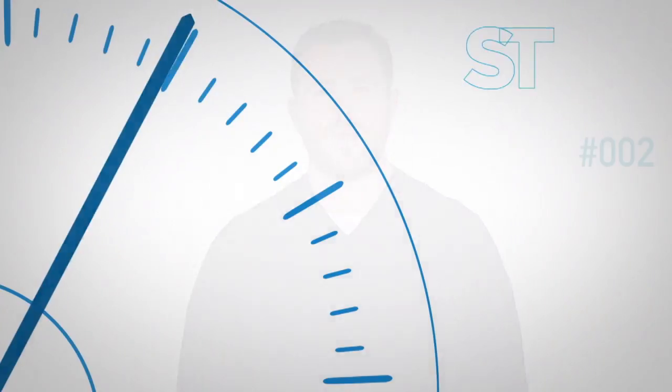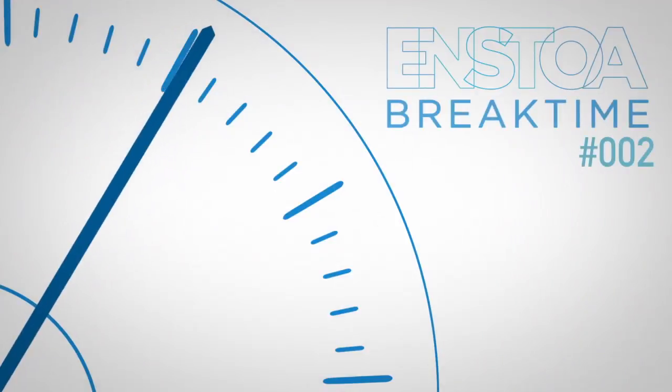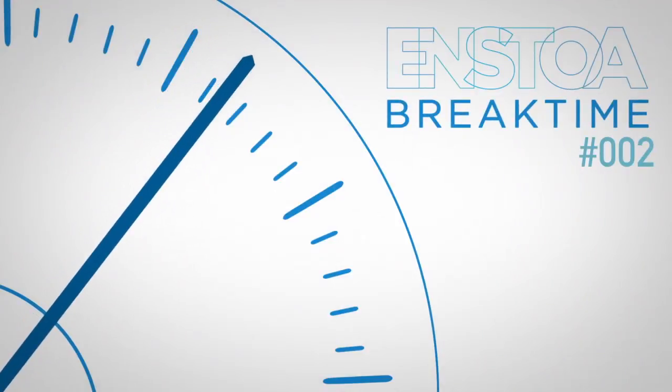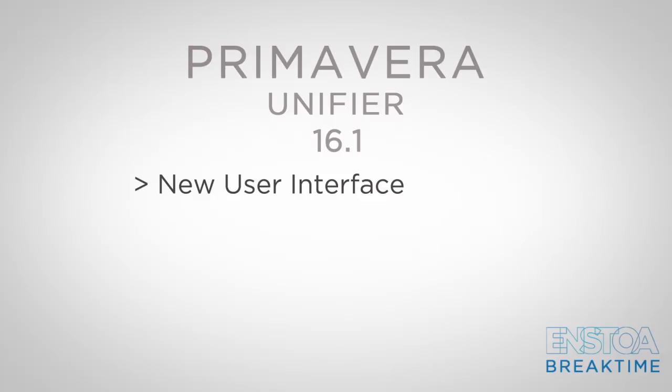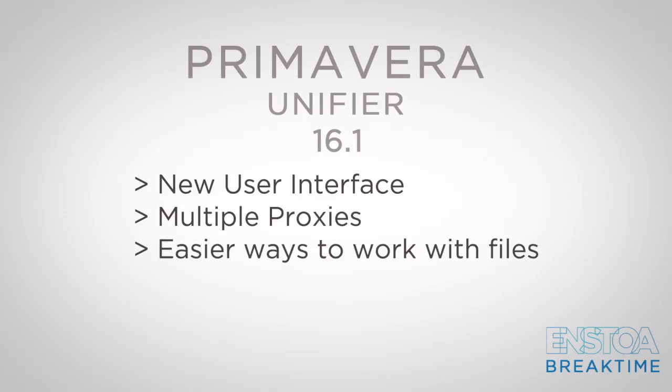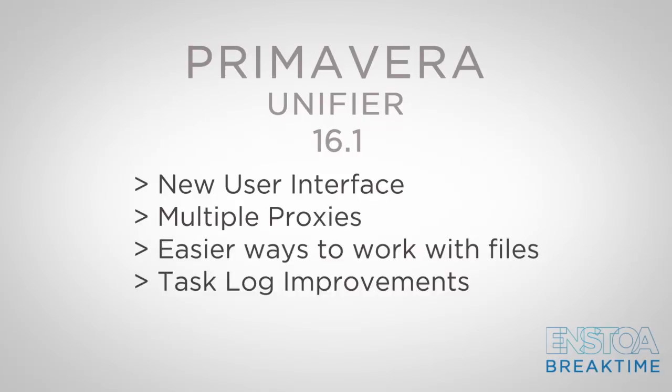Welcome to your Instoa break time. Today we're going to be taking a look at what's new in Primavera Unifier 16.1, including the new user interface, the ability to have multiple proxies, easy ways to work with files, and the new task log improvements. So what are you actually going to get in 16.1? A whole lot of features that are going to make your life a lot easier. Here are some of our favorites.